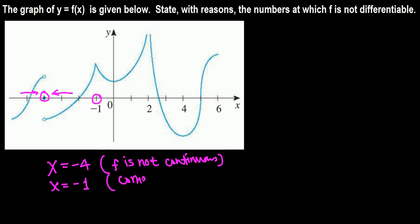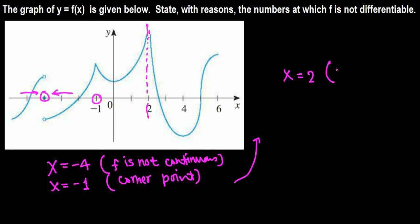Moving on all the way to 2, it looks like there is a vertical asymptote. The function is increasing without bound; there is a vertical asymptote. So x equals 2 — the function is not continuous, it's discontinuous.